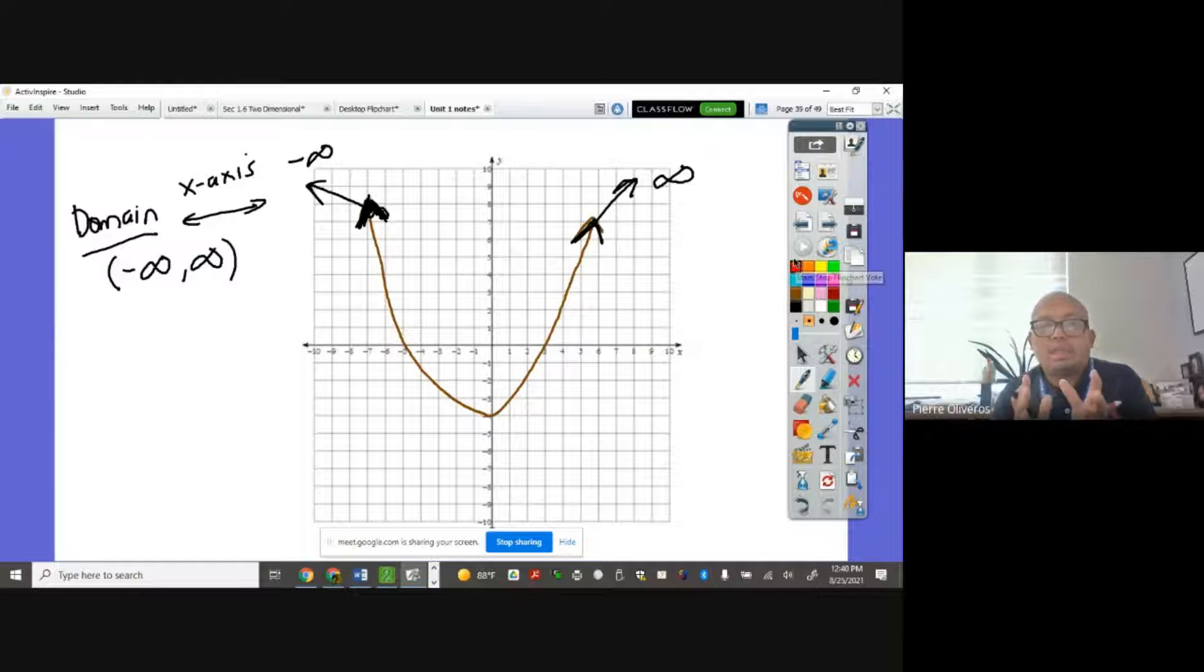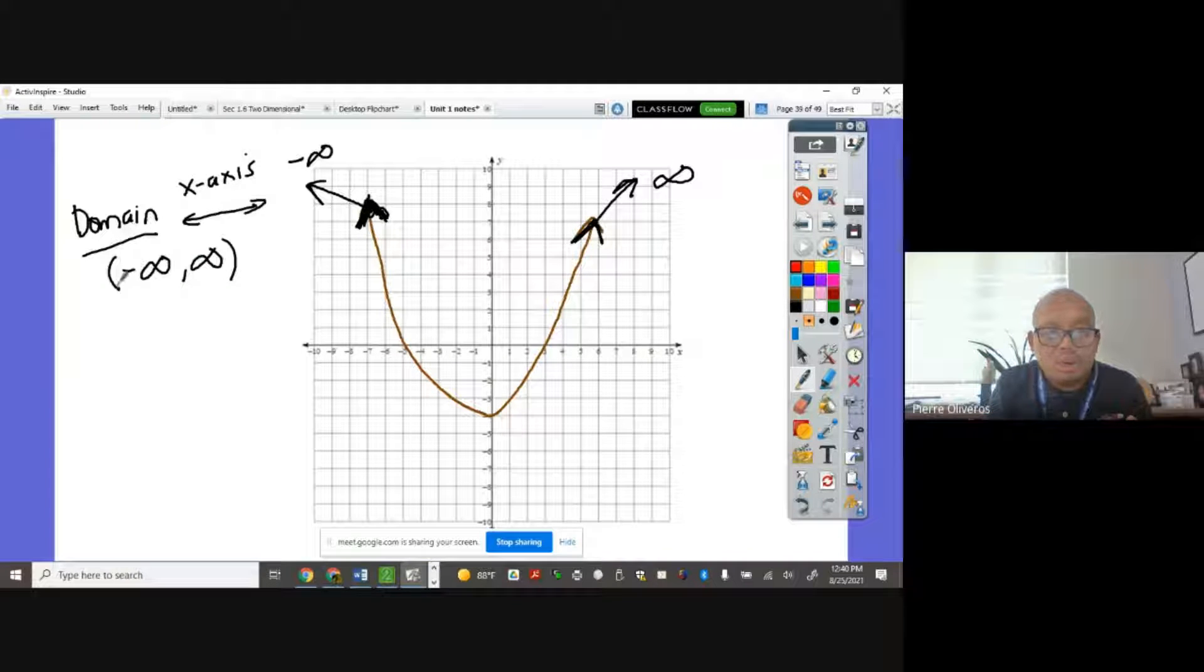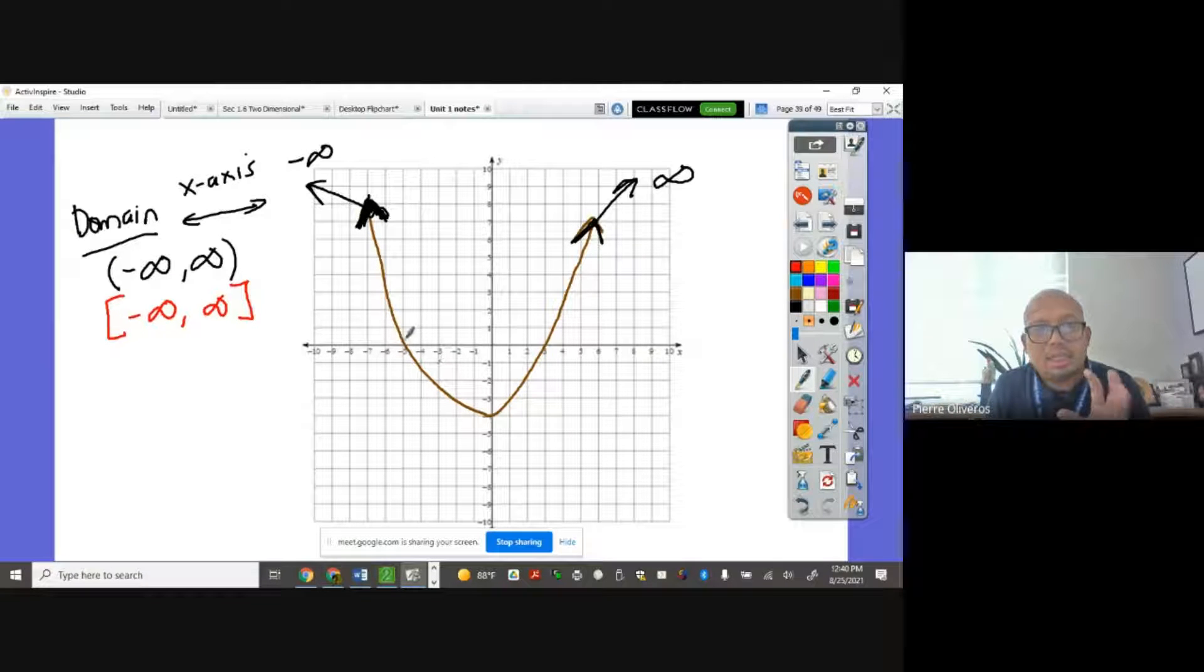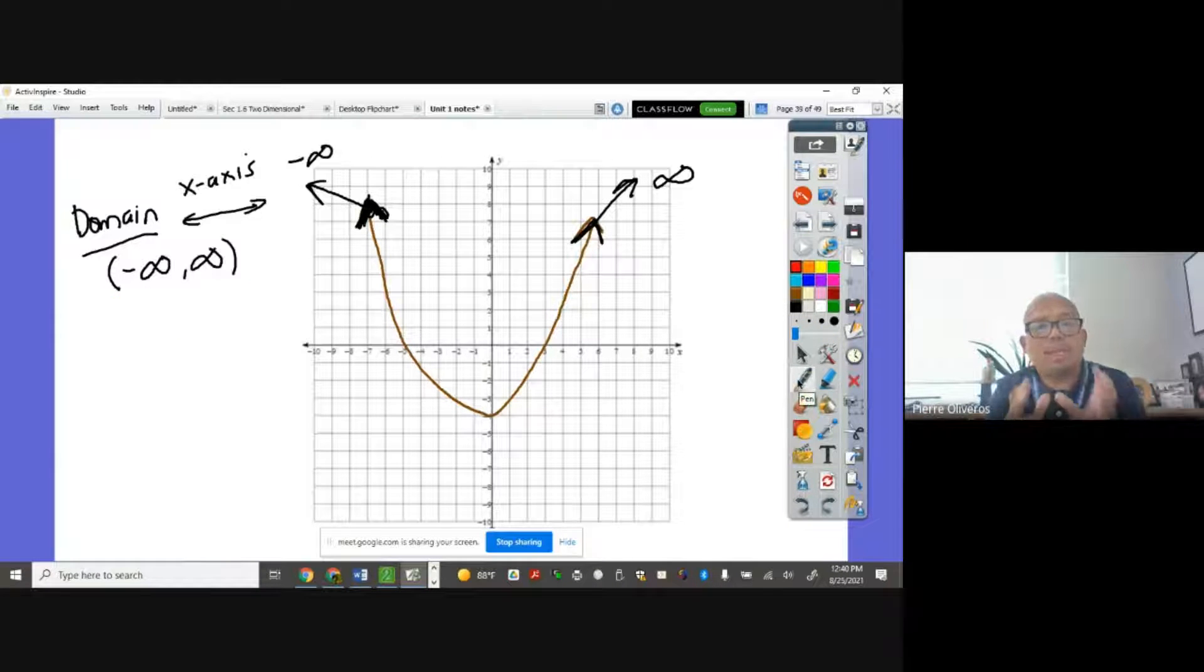Take note, since the infinity never stopped, we never used bracket. So this is wrong. A negative infinity to positive infinity bracket is wrong. That's the wrong way. The right way is to use parenthesis, okay? That's the right way. We never use bracket with an infinity.